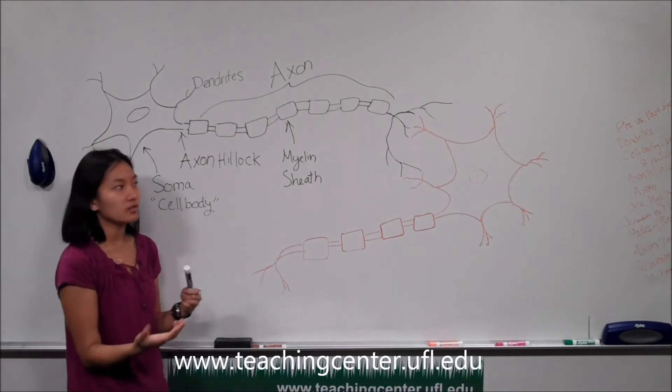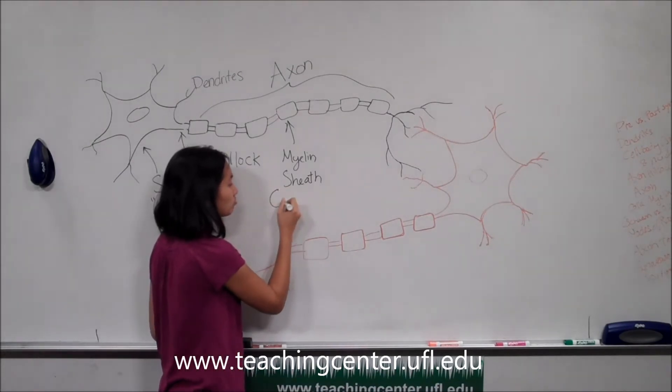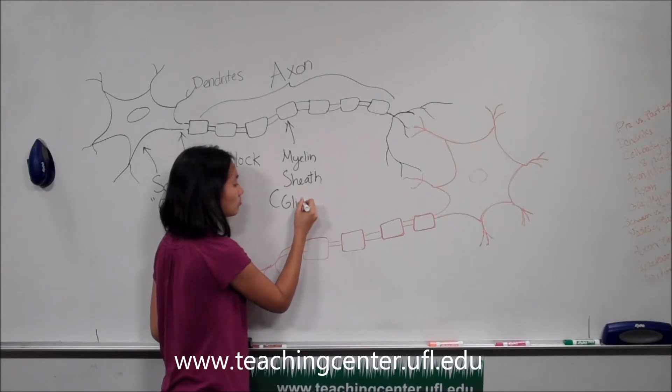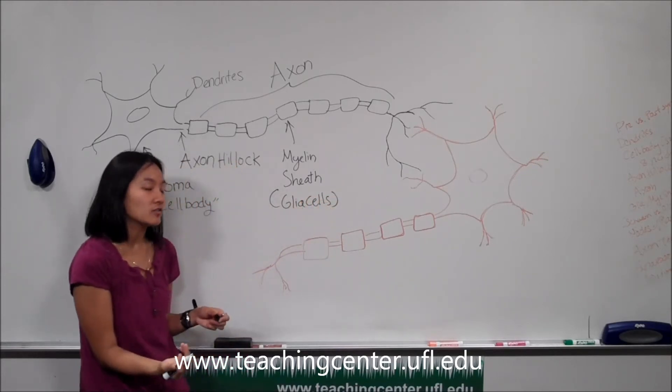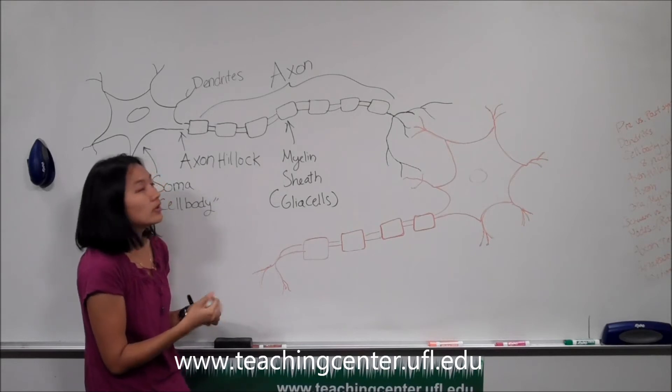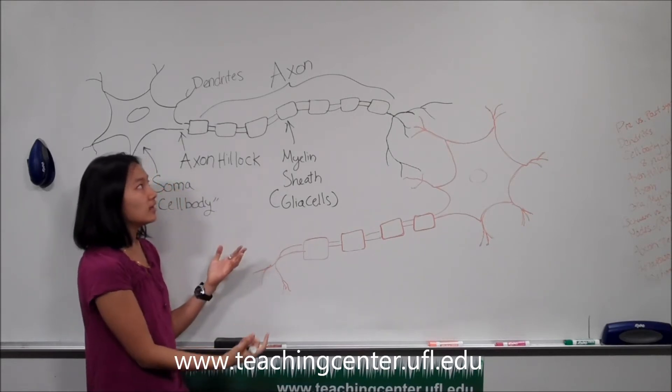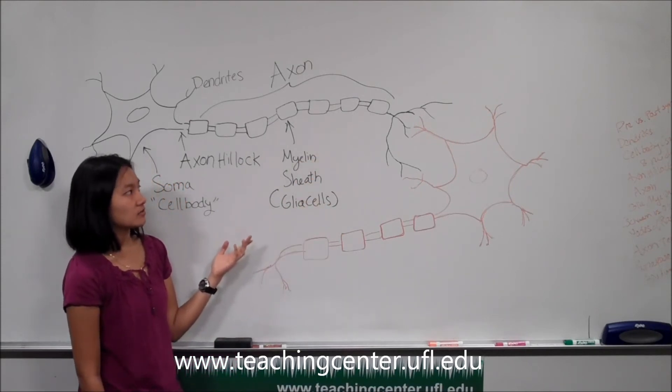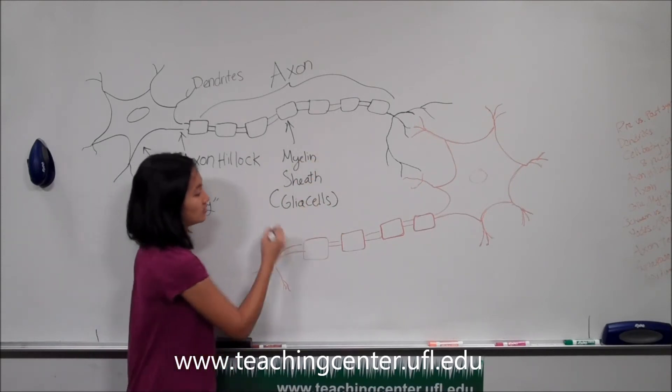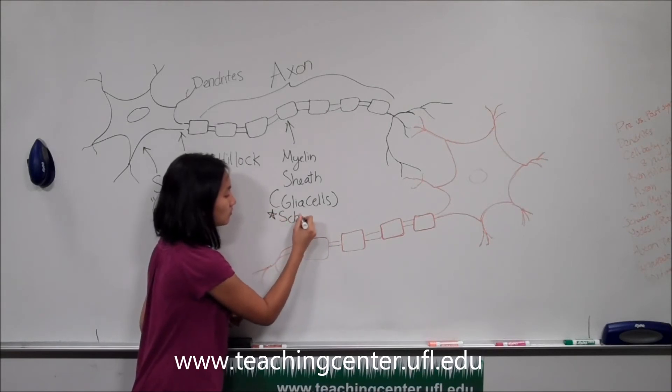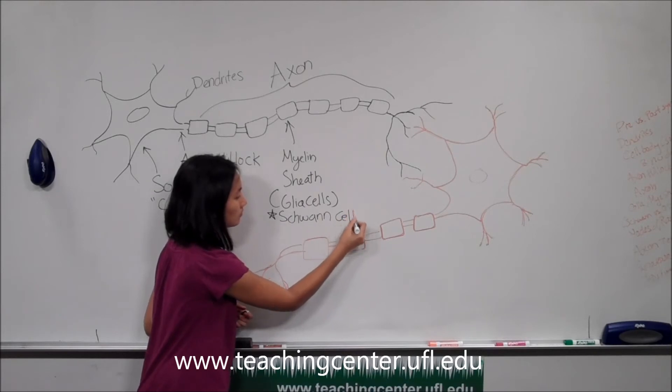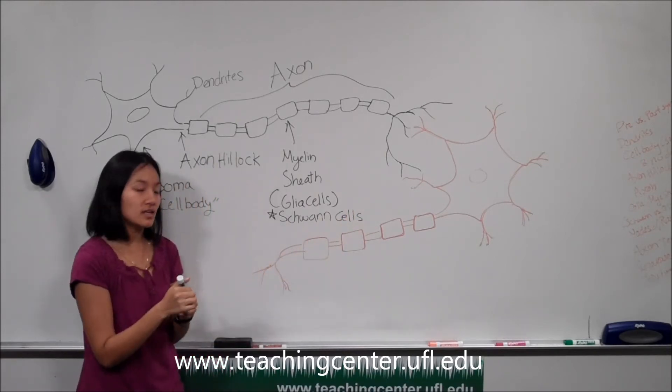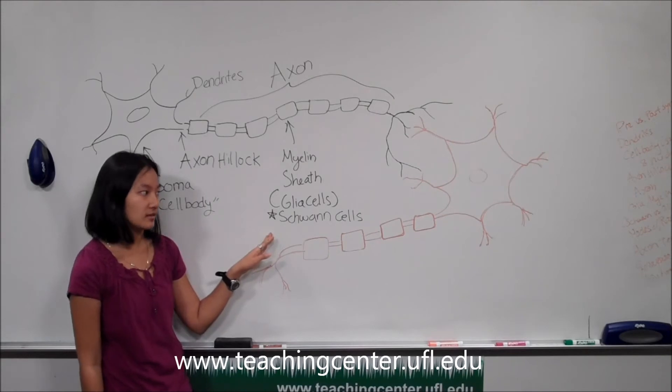Myelin sheaths are composed of glial cells, which are the other types of cells found in the nervous system. Now there are two types of glial cells that can make up the myelin sheath. In this case, these glial cells are made up of something known as Schwann cells, and Schwann cells tend to be found only in the peripheral nervous system.